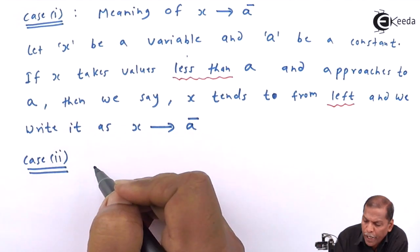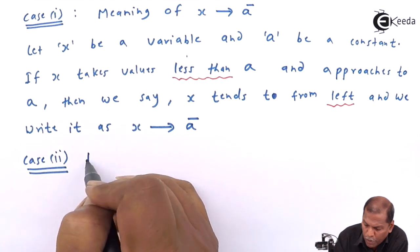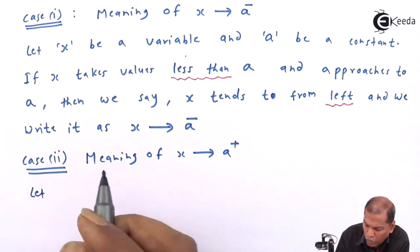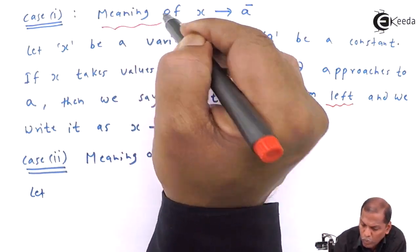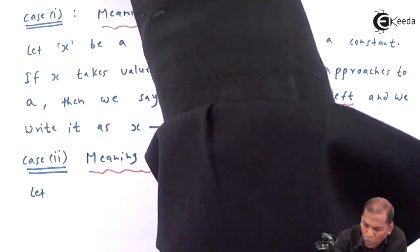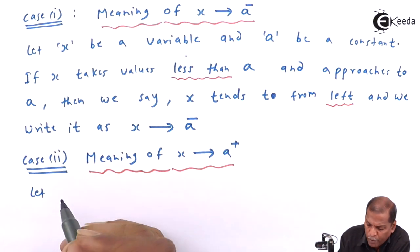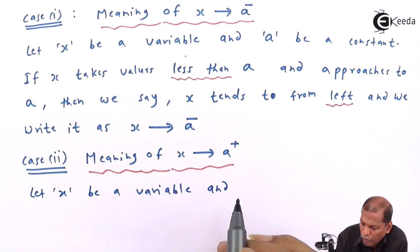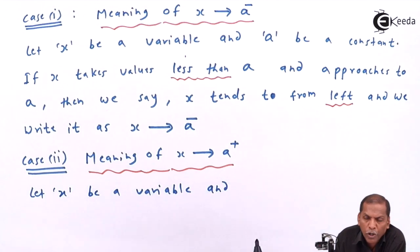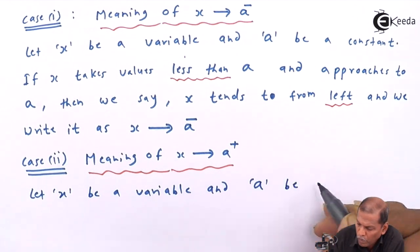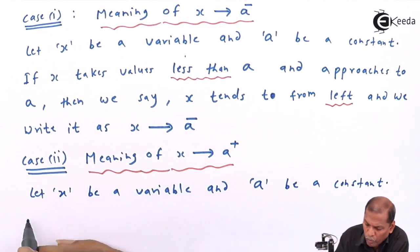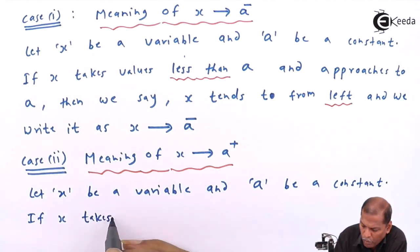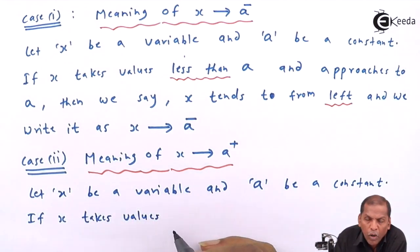Now we see case number two: the meaning of x tends to a plus. Let x be a variable and a be a constant. If x takes values greater than a